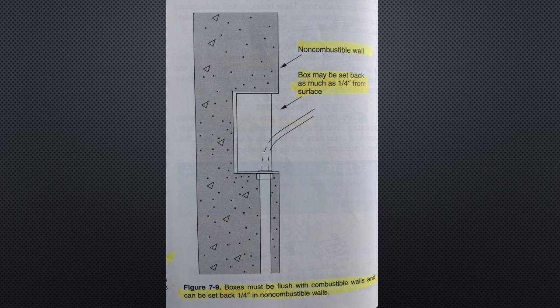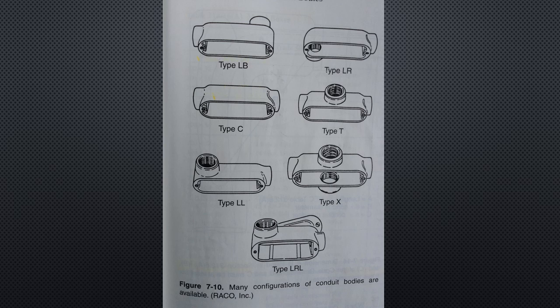Conduit bodies: conduit bodies are used in several situations: making 90 degree turns in a conduit run, pulling cables into a wiring system, splicing conductors, making taps from feeders or branch circuit conductors.